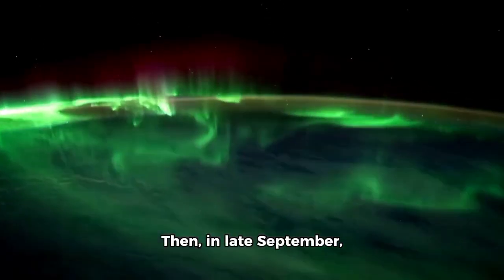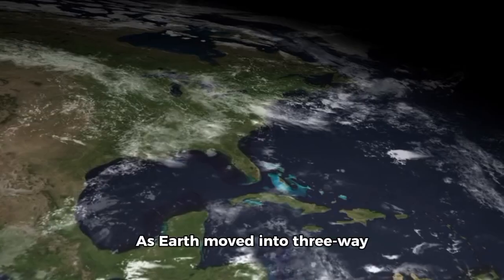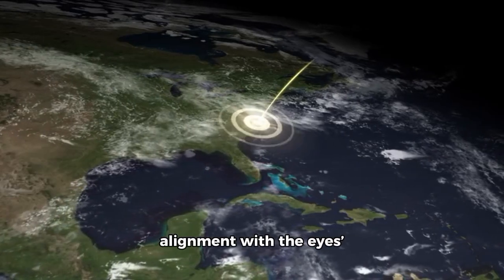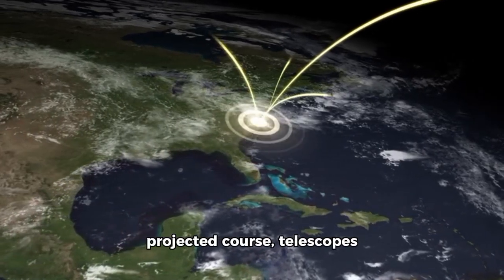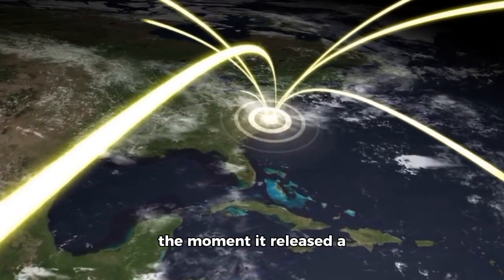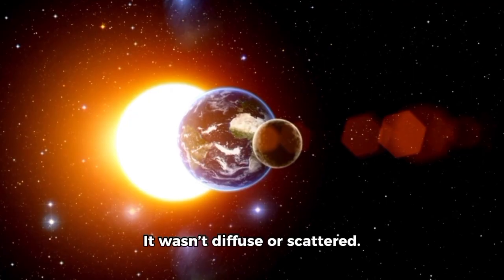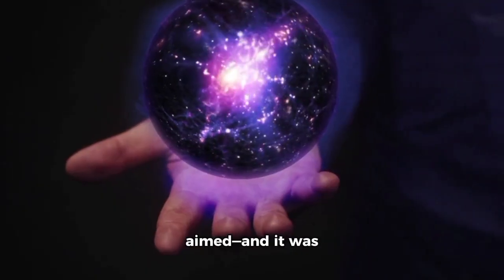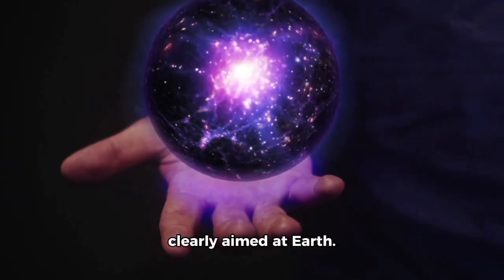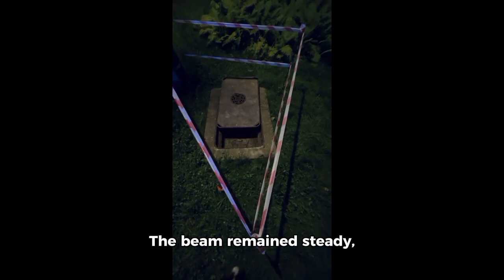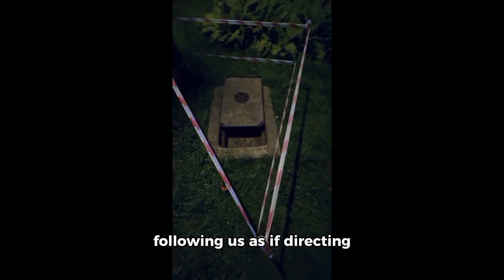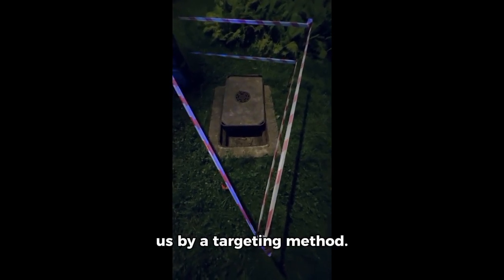Then, in late September, the phenomenon peaked. As Earth moved into alignment with 3E's projected course, telescopes circling the world captured the moment it released a narrow line of light. It wasn't diffuse or scattered. It was small, aimed, and it was clearly aimed at Earth. The beam remained steady, securing our position, following us as if directed by a targeting method.